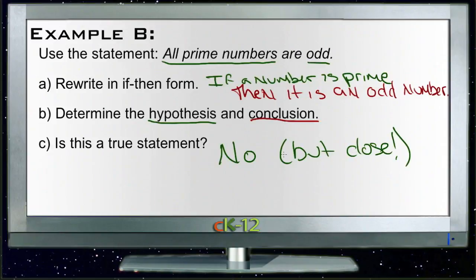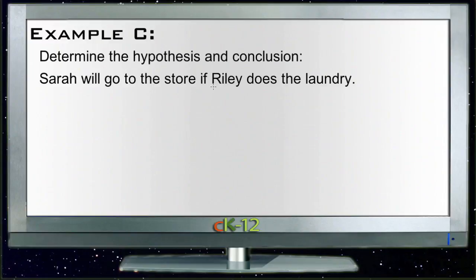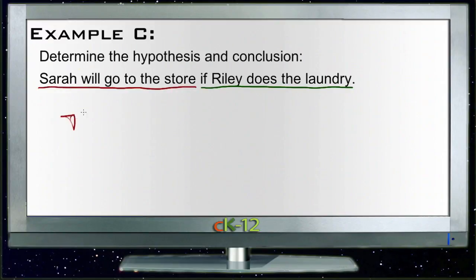There's only one real exclusion to it. Let's take a look at Example C. Example C says: determine the hypothesis and conclusion for 'Sarah will go to the store if Riley does the laundry.' Again this looks like another example written in reverse order. The proposal is that Riley will do the laundry, and the result is that Sarah will go to the store. So: if Riley does the laundry, then Sarah will go to the store.